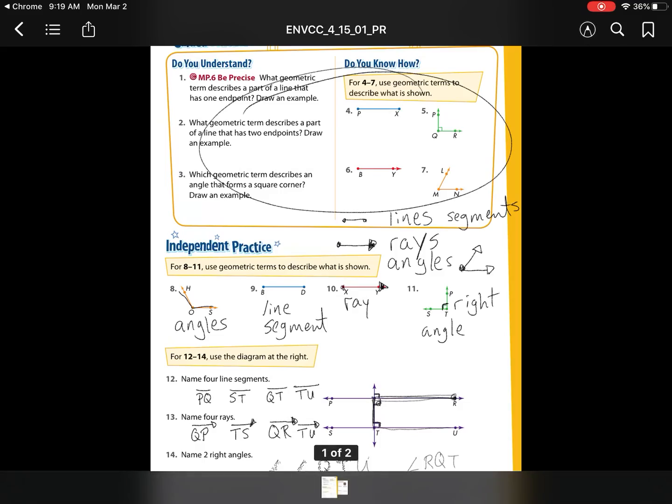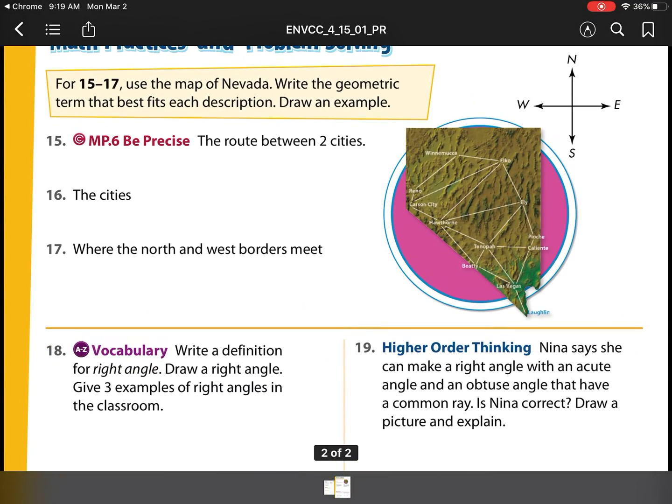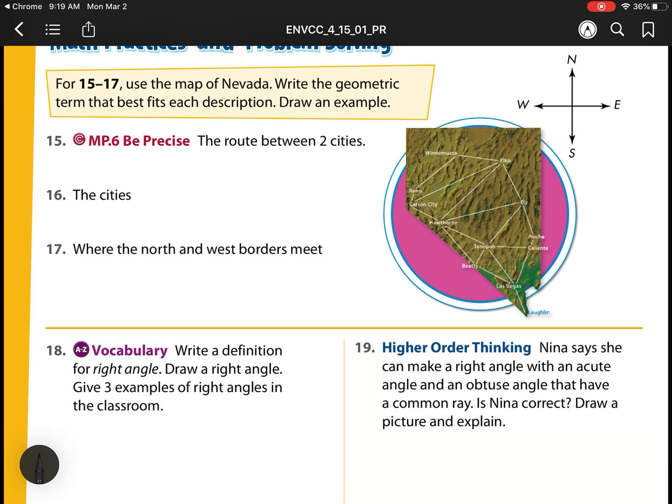Use the map of Nevada. Write the geometric term that best describes each. The route between two cities, I'm going to say from Reno to Carson City, or pretty much any place, Hawthorne to Elko, those are all line segments. I have a start and a stop. What about an actual city? At Winnemucca, or at Ely, or at Tonopah, these are all points. They're all dots.